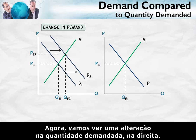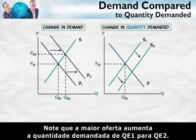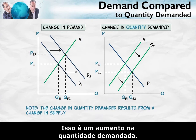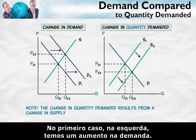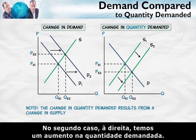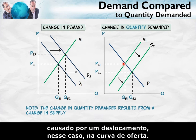Now let's look at a change in the quantity demanded on the right. Suppose, for example, that the supply increases. Notice that an increased supply increases the quantity demanded from QE1 to QE2 — that's an increase in the quantity demanded. In the first case on the left, we have an increase in demand: the entire demand curve shifts out. In the second case on the right, we have an increase in the quantity demanded — a movement along a fixed demand curve caused, in this case, by a shift in the supply curve.